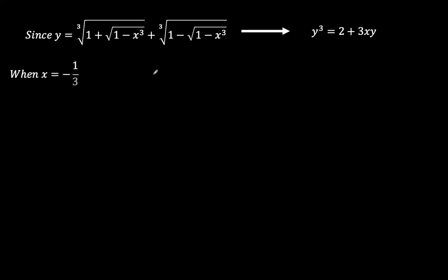so when x equals negative a third, when you insert negative a third here, we get y cubed equals 2 minus y. And so that means when you take everything on the right to the left, that means that y cubed plus y minus 2 equals 0.